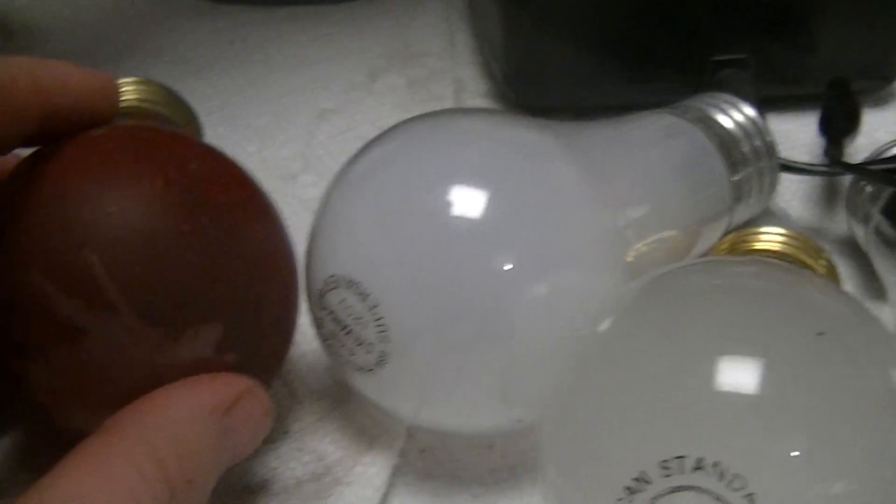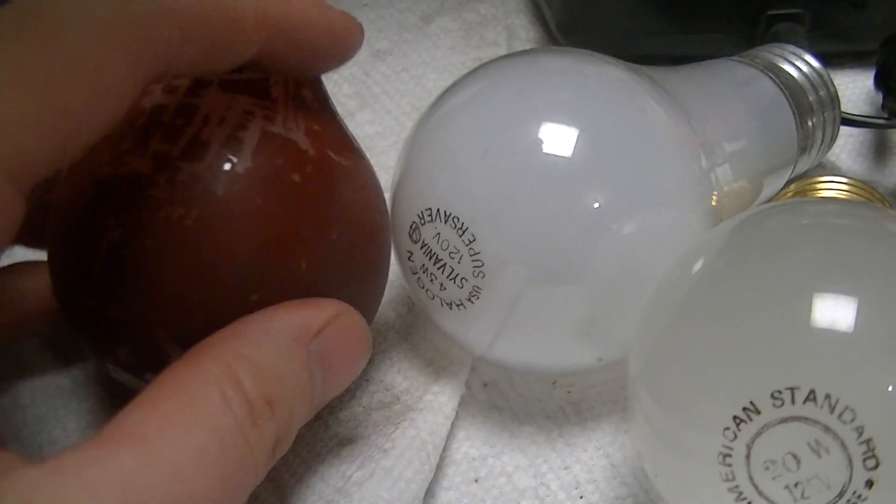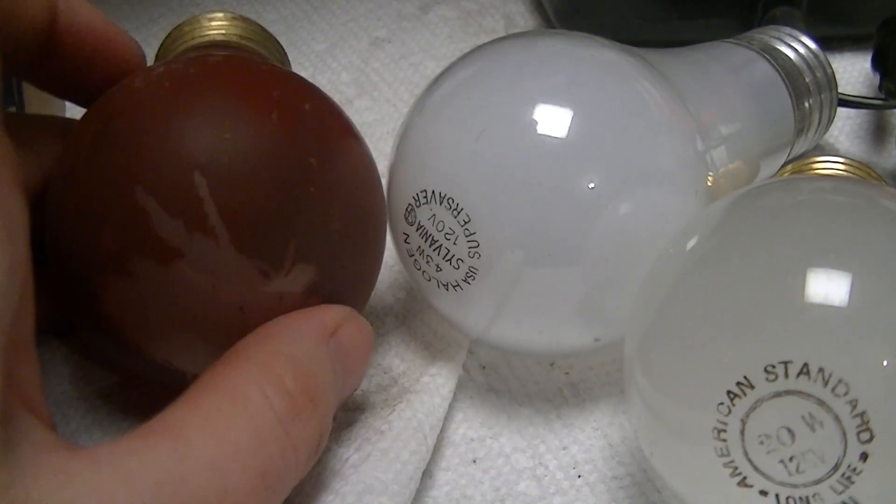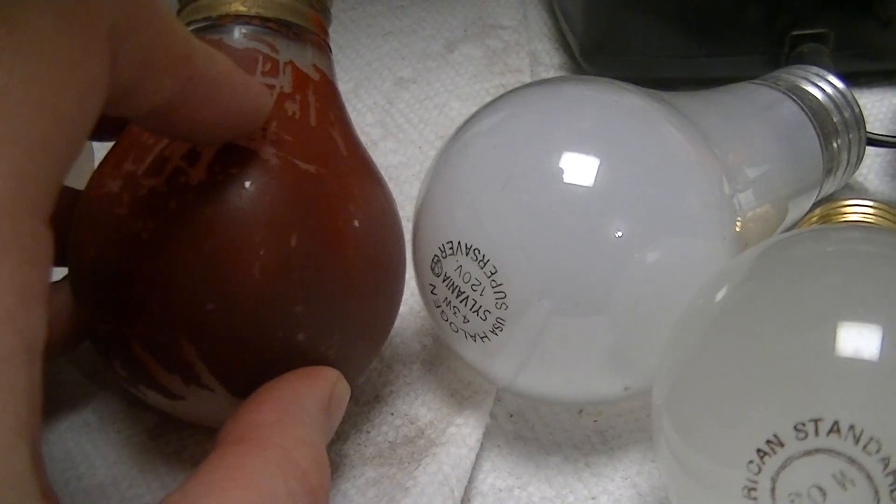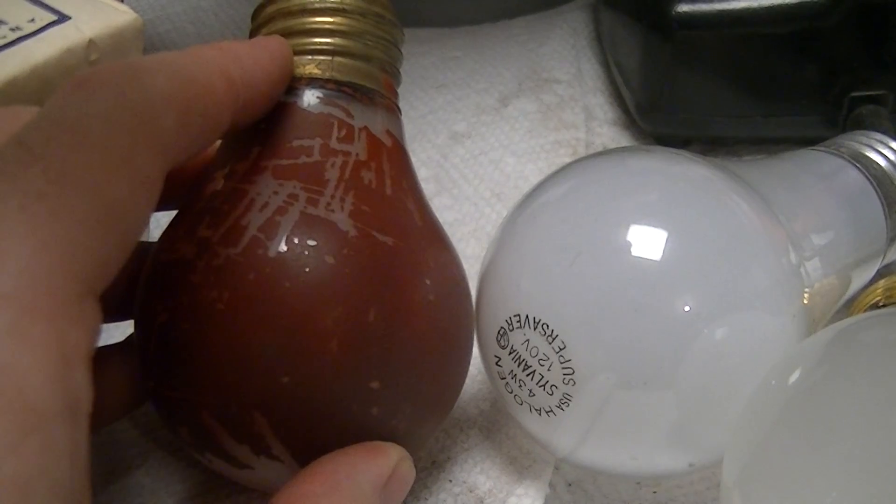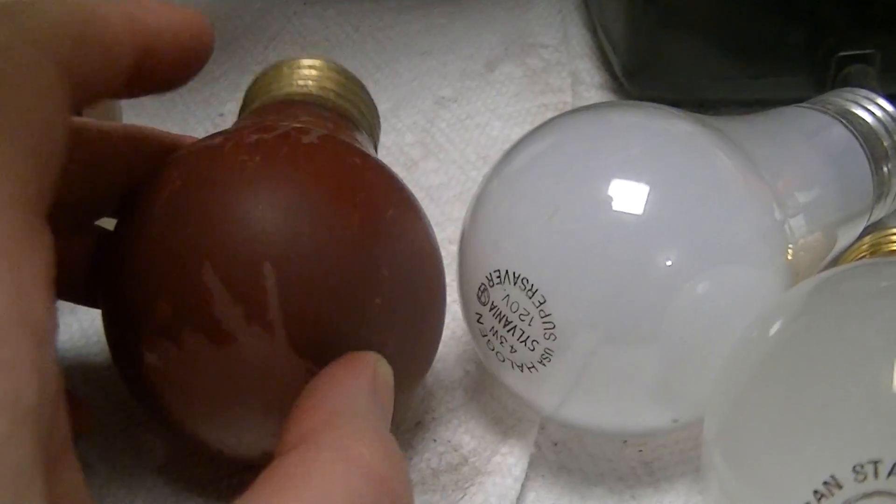And this, which is a 1920s or possibly very early 1930s, but I suspect because of the outside edge it's 1920s, General Electric Mazda lamp. Still works of course.